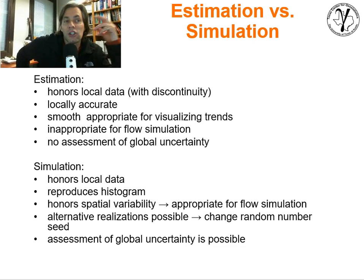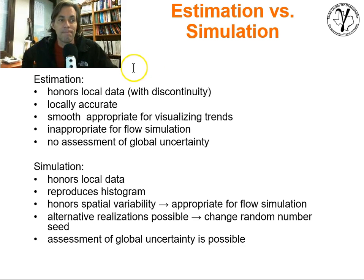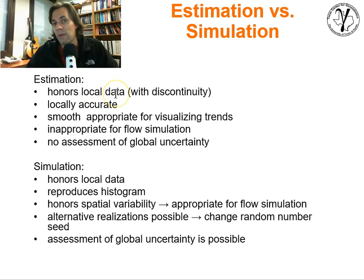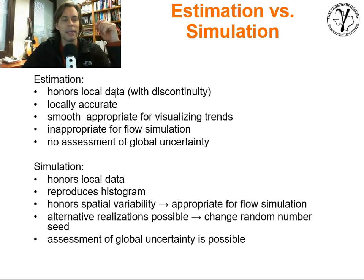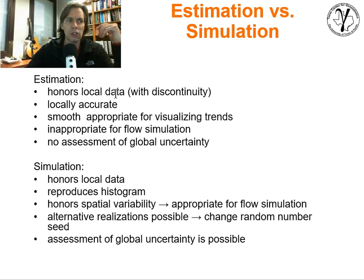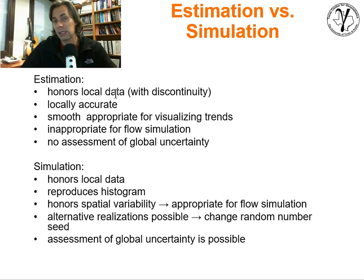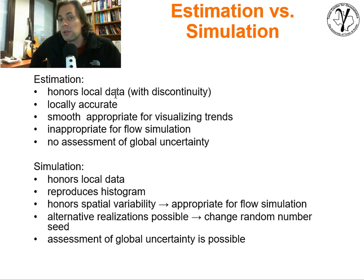So let's compare estimation with simulation — the two workflows. Estimation is going to honor the local data, and so will simulation. With estimation, if you have a nugget effect you might have a bit of discontinuity at the data locations. Estimation is also locally very accurate — it seeks to get the very best value at each location. It smooths, so it's appropriate for visualization of trends to understand general features. But it is inappropriate for any type of transfer function or process that requires heterogeneity in order to get a good estimate. There is also no assessment of global uncertainty.